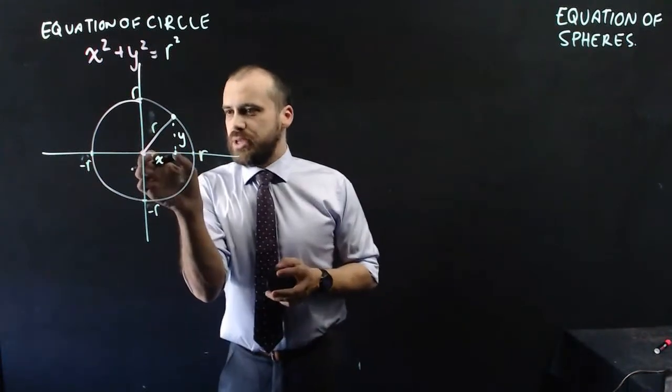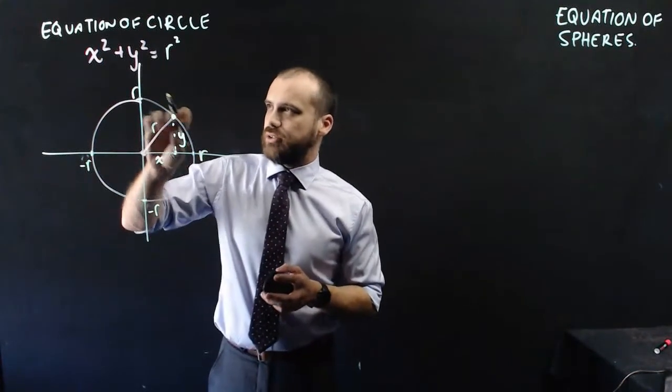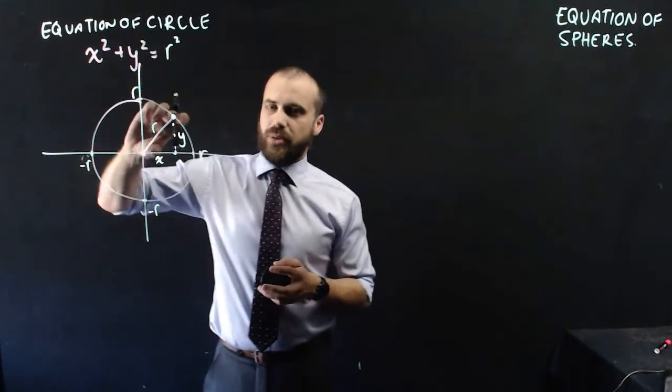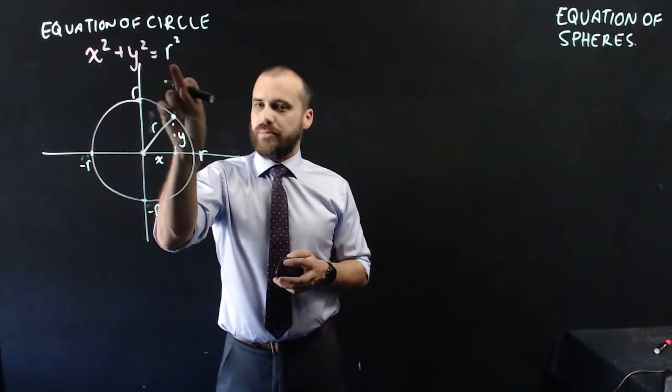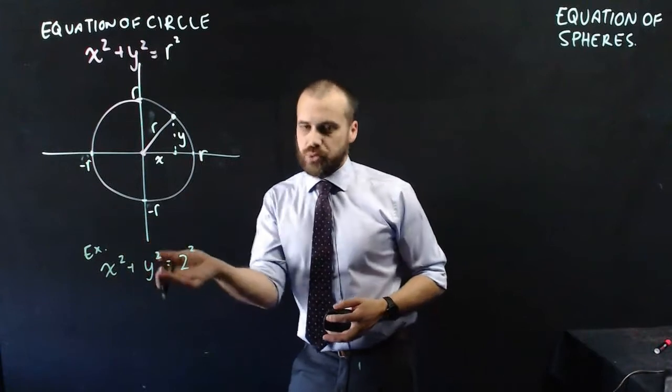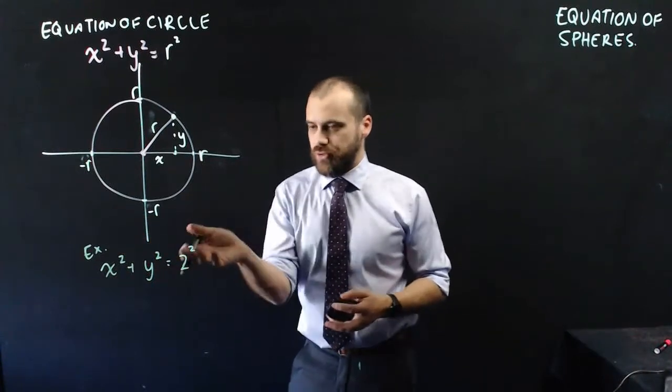What we're saying is there must be an x value and a y value, such that when you square them both and add them together, you get this hypotenuse. We hold that hypotenuse steady, so let's make it something simple. An example: x squared plus y squared equals two squared, so four.